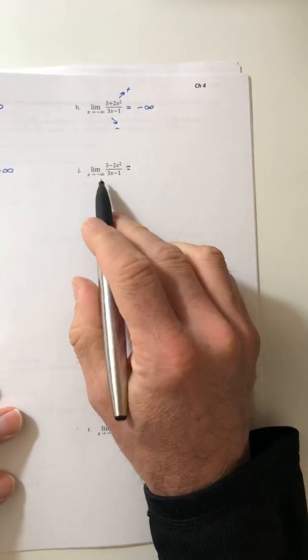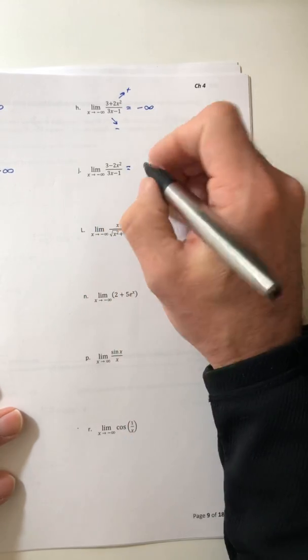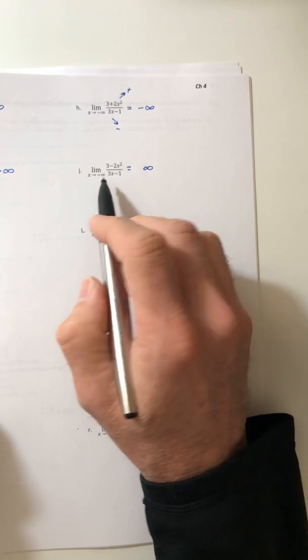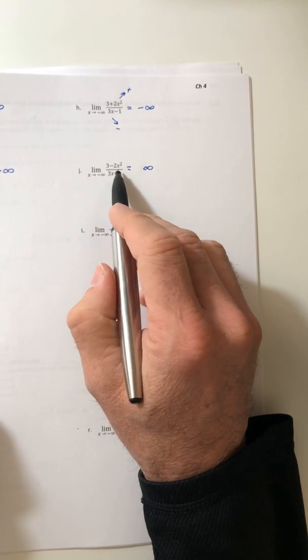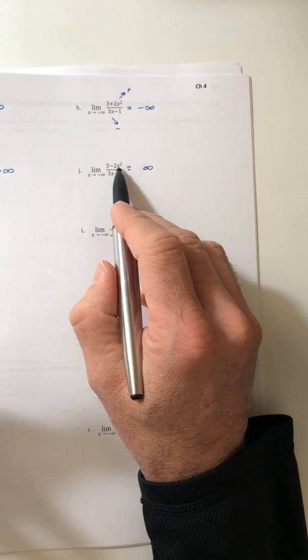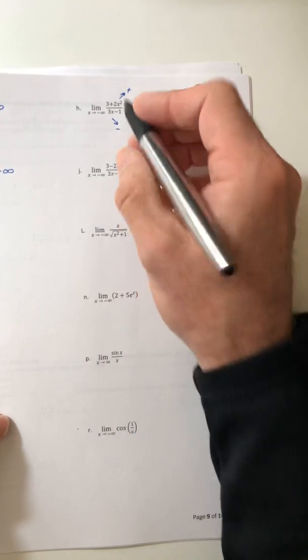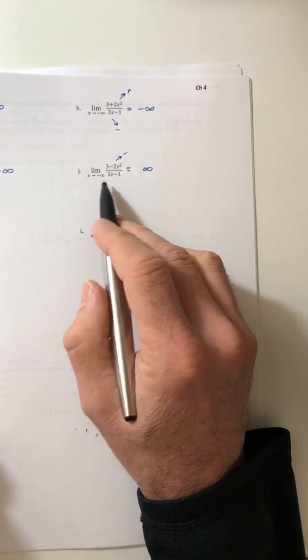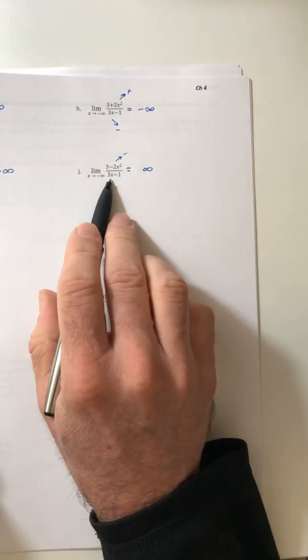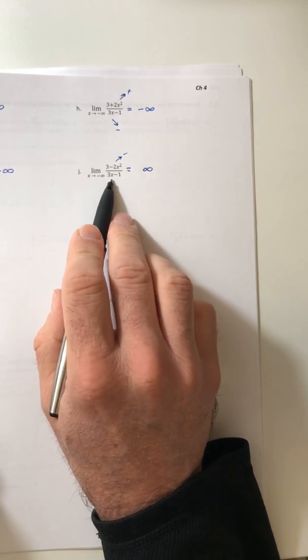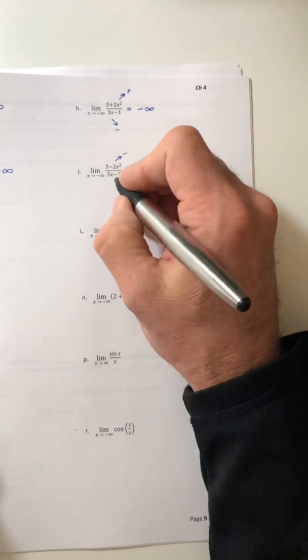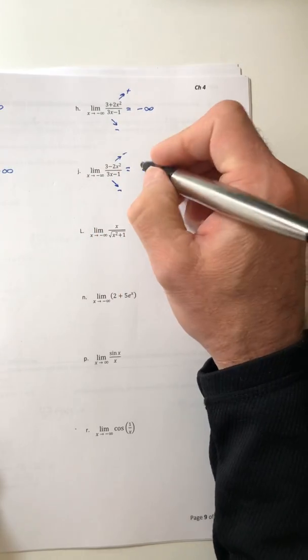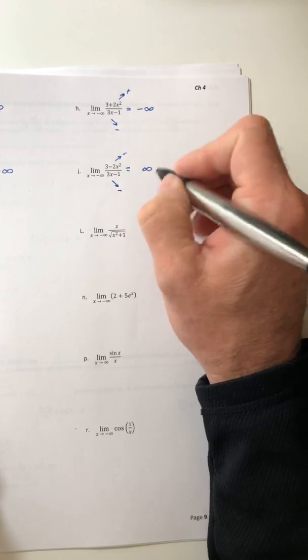So looking at example j, again, the numerator has a larger degree, so it's an infinity. And let's figure out which one it is. So plug in big negative numbers. So if you squared it, that's a positive, but times a negative too. Hey, that's now a negative. Underneath, if you plugged in a really big negative number for that x, now the denominator is going to come out as a negative. And a negative over negative is a positive. So we're going to just leave this the way it is.